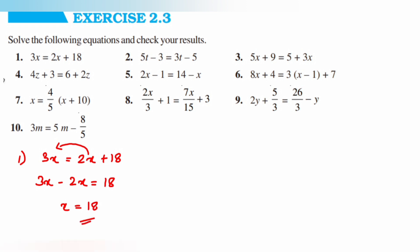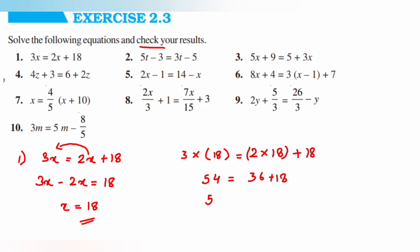Now that we have the answer, we also need to verify it by substituting 18 into the given equation and checking if LHS and RHS are the same. So 3 into 18 is equal to 2 into 18 plus 18, giving us 54 is equal to 36 plus 18, which is 54. So LHS is equal to RHS, meaning x is equal to 18 is correct.